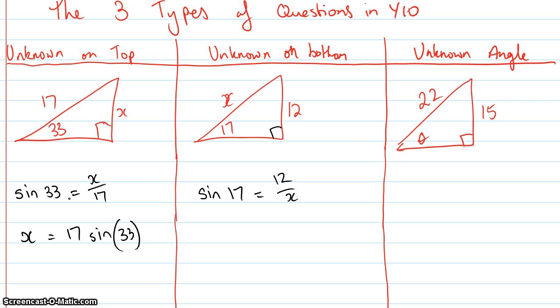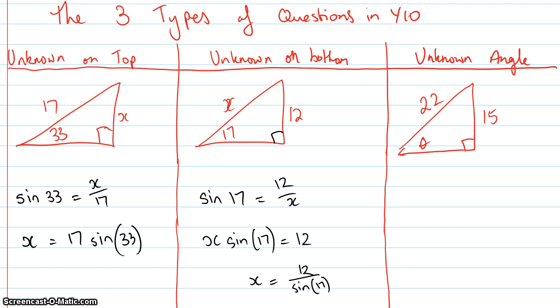So this one is a little bit different. This one, I need to multiply both sides by x, so I get x times sine 17 equals 12, which is good. And now I divide both sides by sine 17, so I get x equals 12 over sine 17. Okay, so that's the key difference between the two.